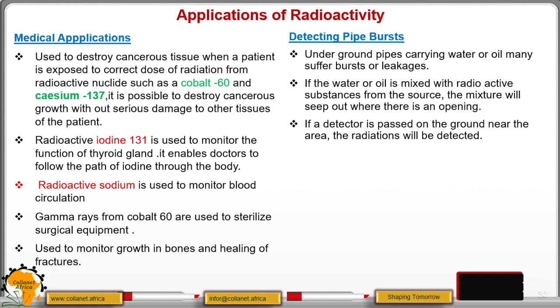A detector is passed on the ground near the area, and the radiations will be detected. If the radiations are detected, you will know that there is a burst in that pipe.